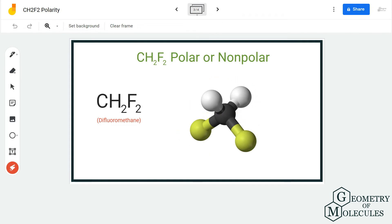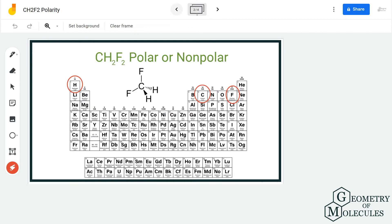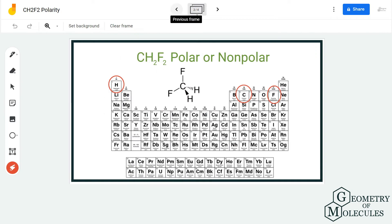Now we can look at the electronegativities of individual atoms. When we come to hydrogen, the electronegativity for hydrogen is 2.20, and for carbon it is 2.55, which is less than 0.4, so these bonds are not polar. But